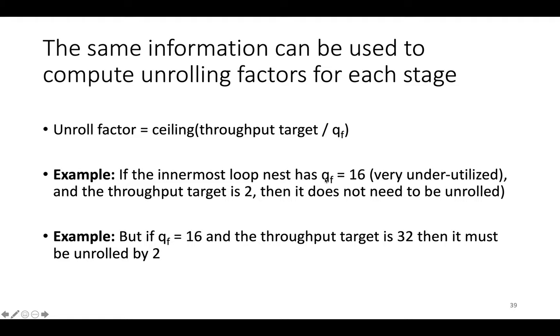For example, if the innermost loop nest has Q = 16, meaning it's very underutilized, and the throughput target is 2, then it doesn't need to be unrolled. If you're only utilized 1/16th of the time at 1 pixel per cycle and increase to 2 pixels per cycle, you'll only be used 1/8th of the time. So the unrolling factor is 1, or no unrolling.